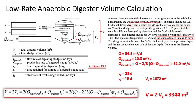With all parameters now calculated, substituting them into the digester volume equation gives an estimated anaerobic digester volume of 3,344 cubic meters for the conditions provided in the example problem.